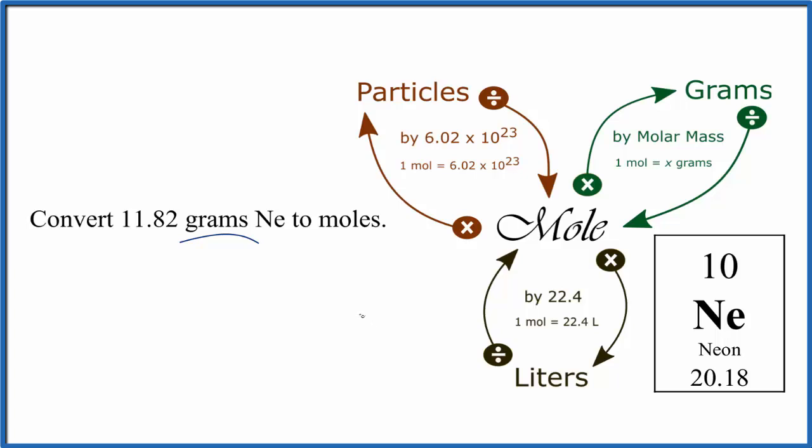So let's start out with grams. We have 11.82 grams. This is just a number I made up for the problem. We're going from grams to moles. We're going to divide by the molar mass. In this case, it's the atomic mass because it's just Ne, and that's 20.18 grams per mole. That'll look like this.